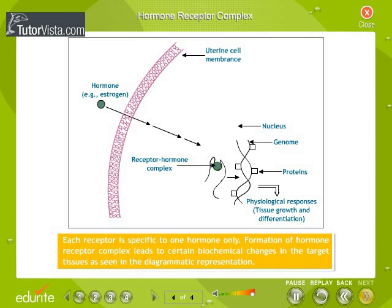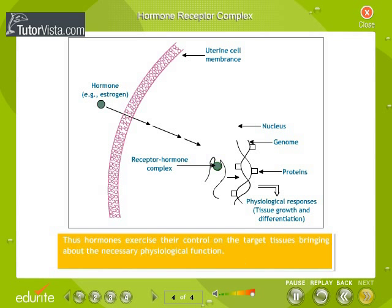Formation of the hormone-receptor complex leads to certain biochemical changes in the target tissues, as seen in the diagrammatic representation. Thus, hormones exercise their control on the target tissues, bringing about the necessary physiological function.